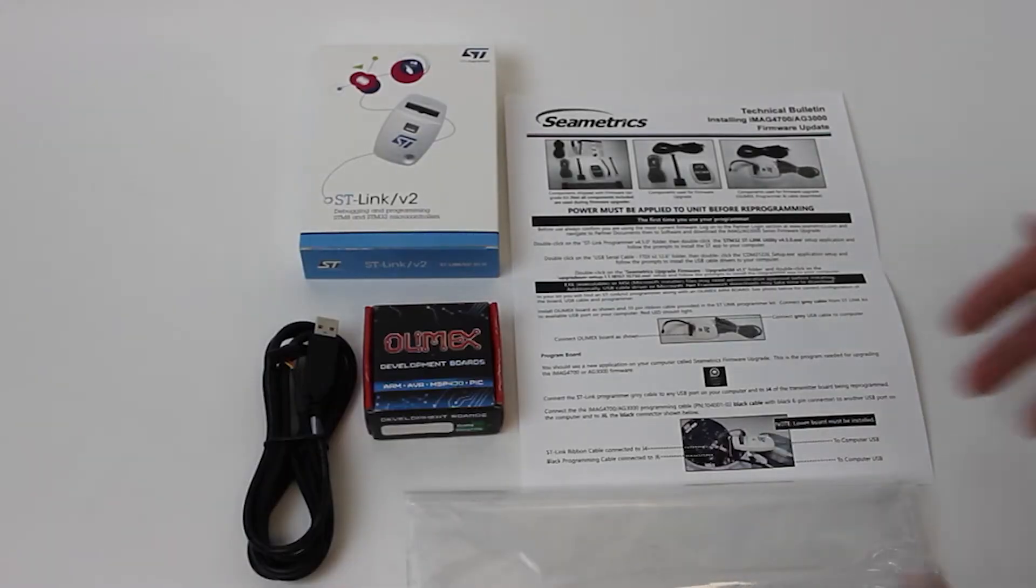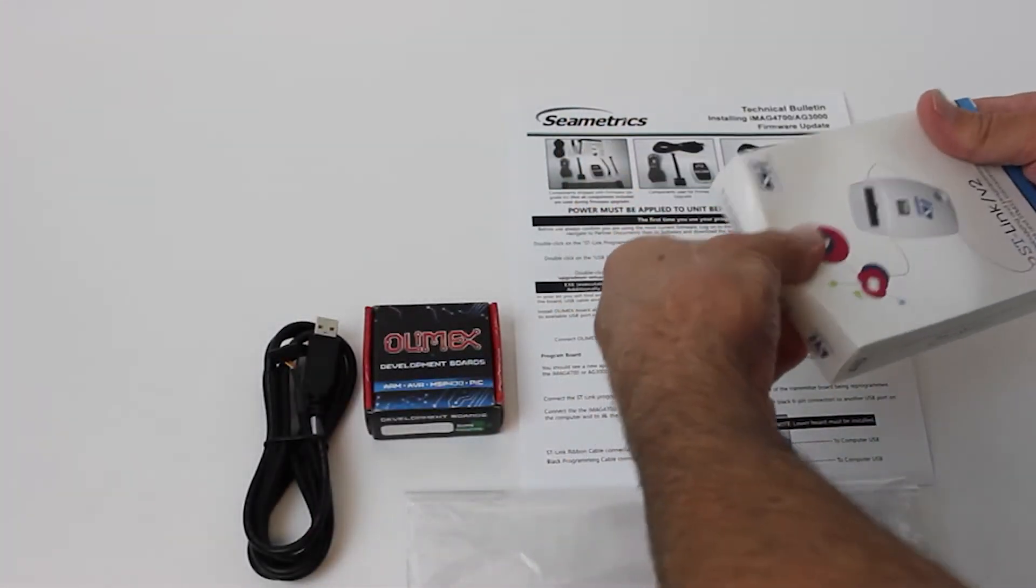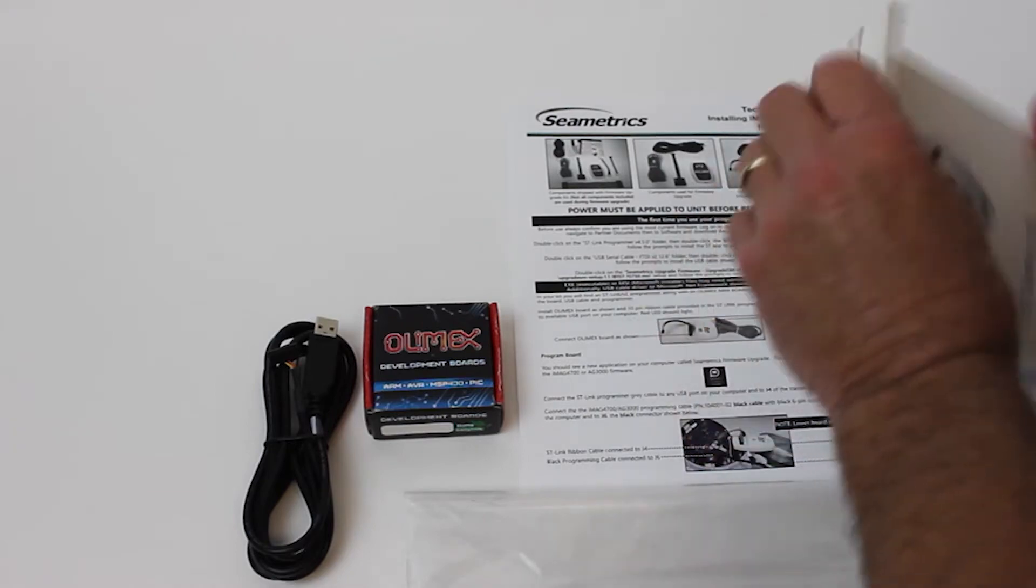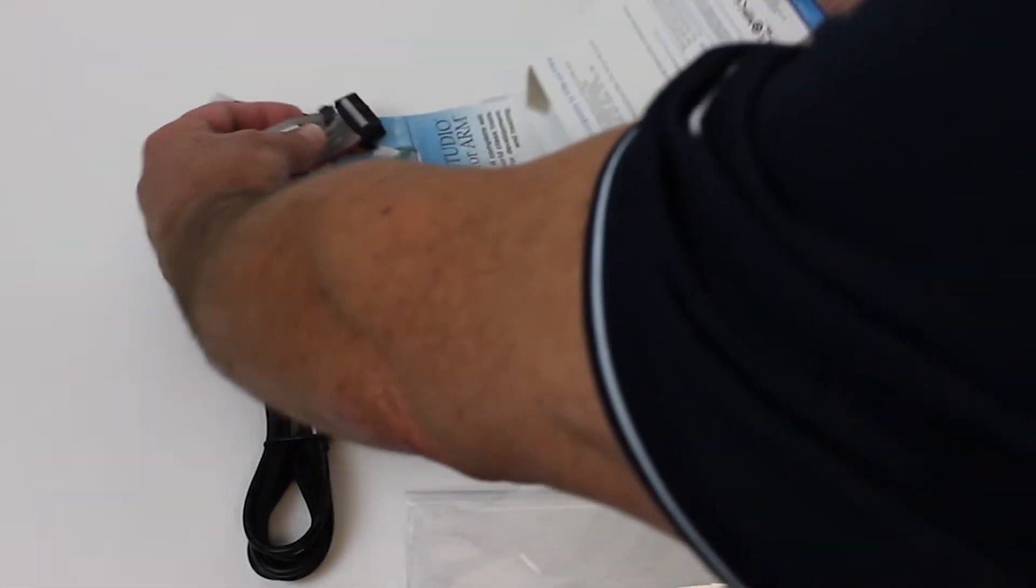Your firmware update kit will come with all these parts. Now you will find inside the STM link programmer there will be some extra parts.